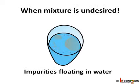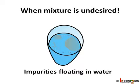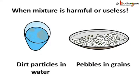We wouldn't try to separate sugar from a drink like lemon squash, but will you ignore if the water you drink has impurities? Obviously, we need to remove the impurities before it is usable. So mixture is not always desirable. Also, when a mixture is either harmful or useless, we need to take out what we need or throw out what we don't need within that mixture.